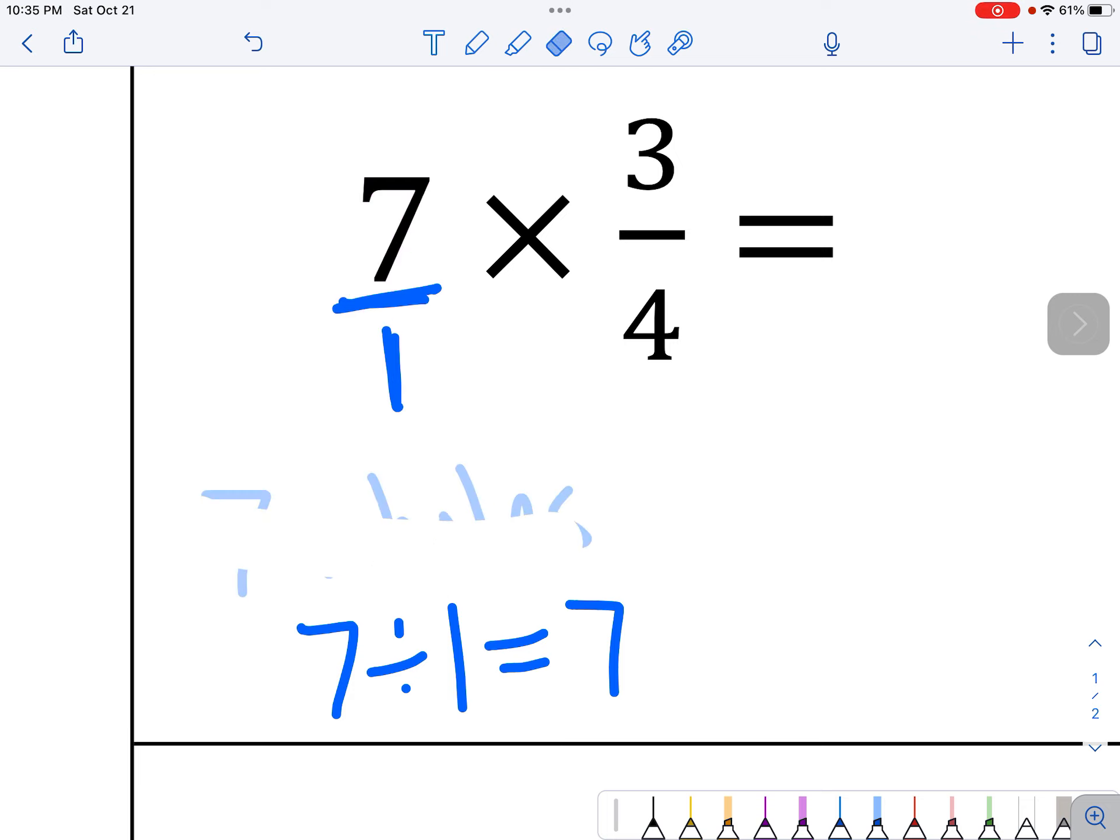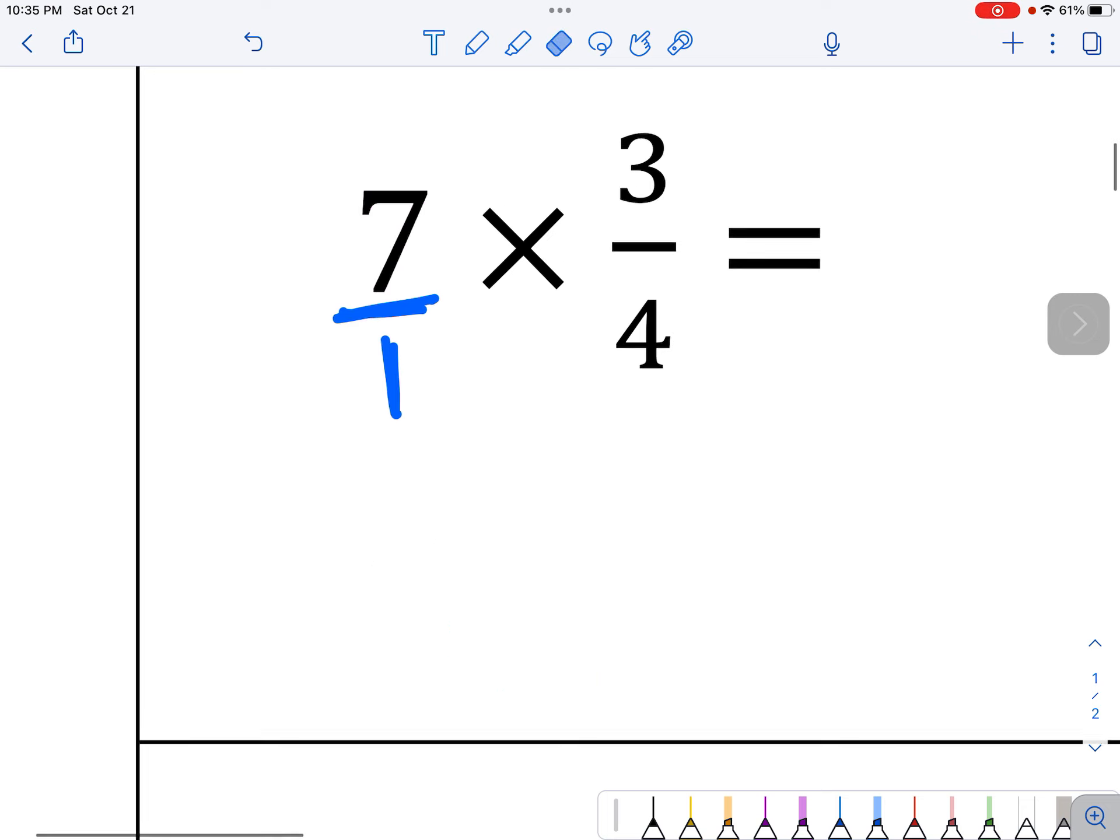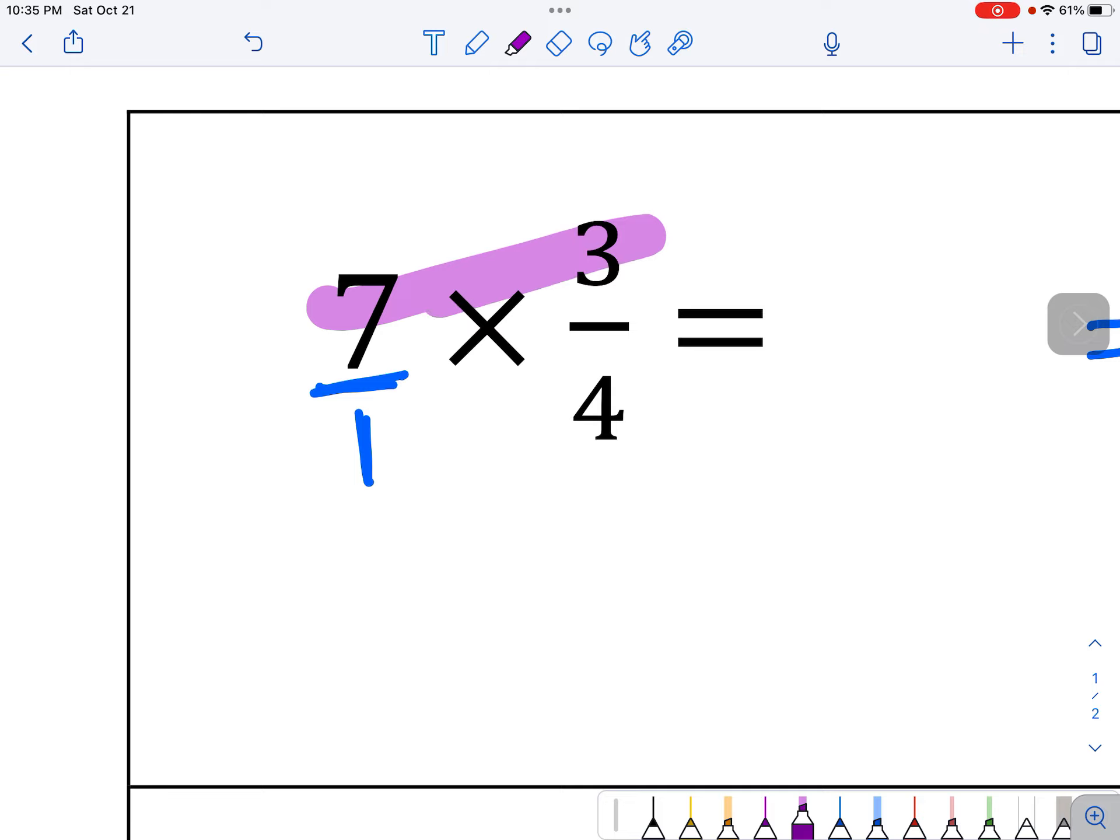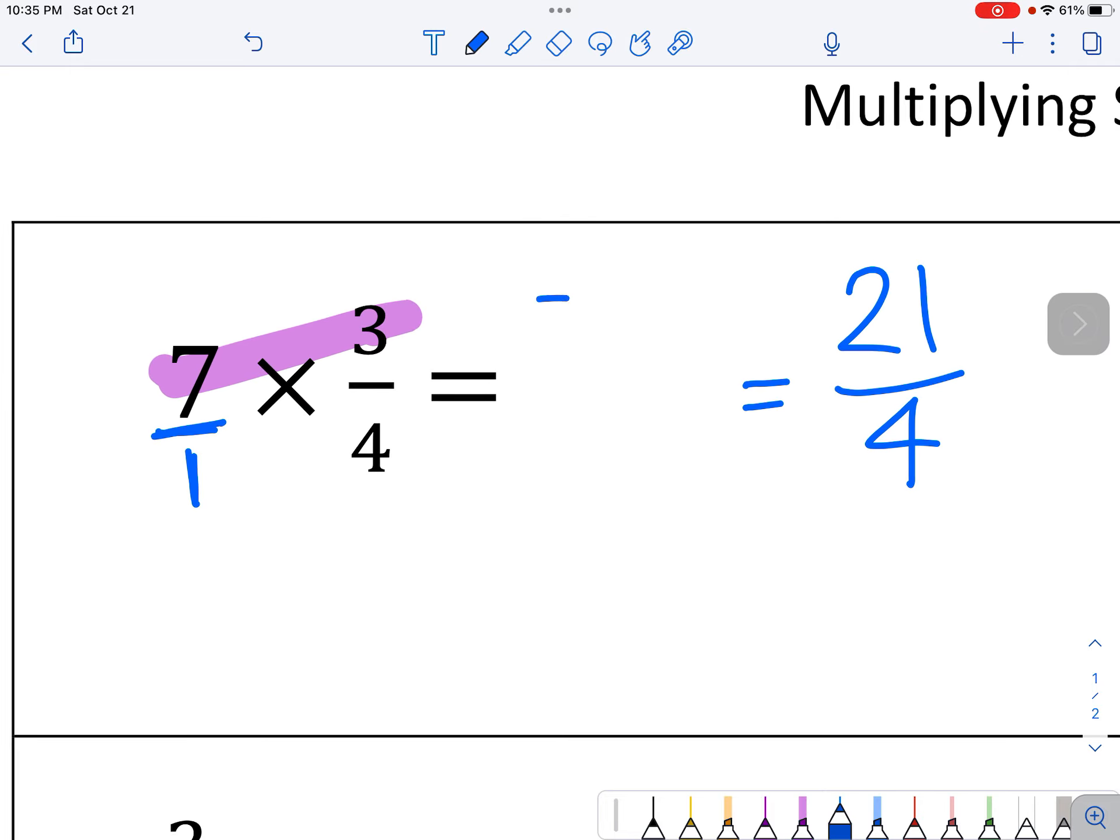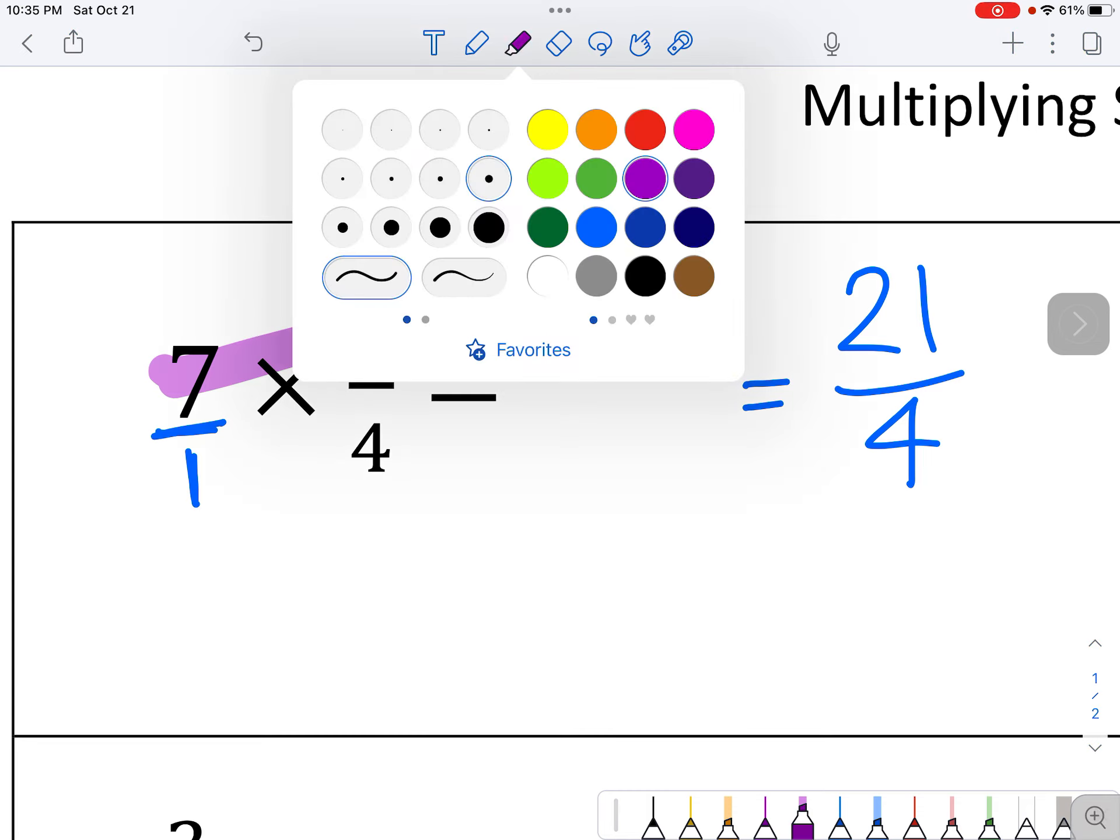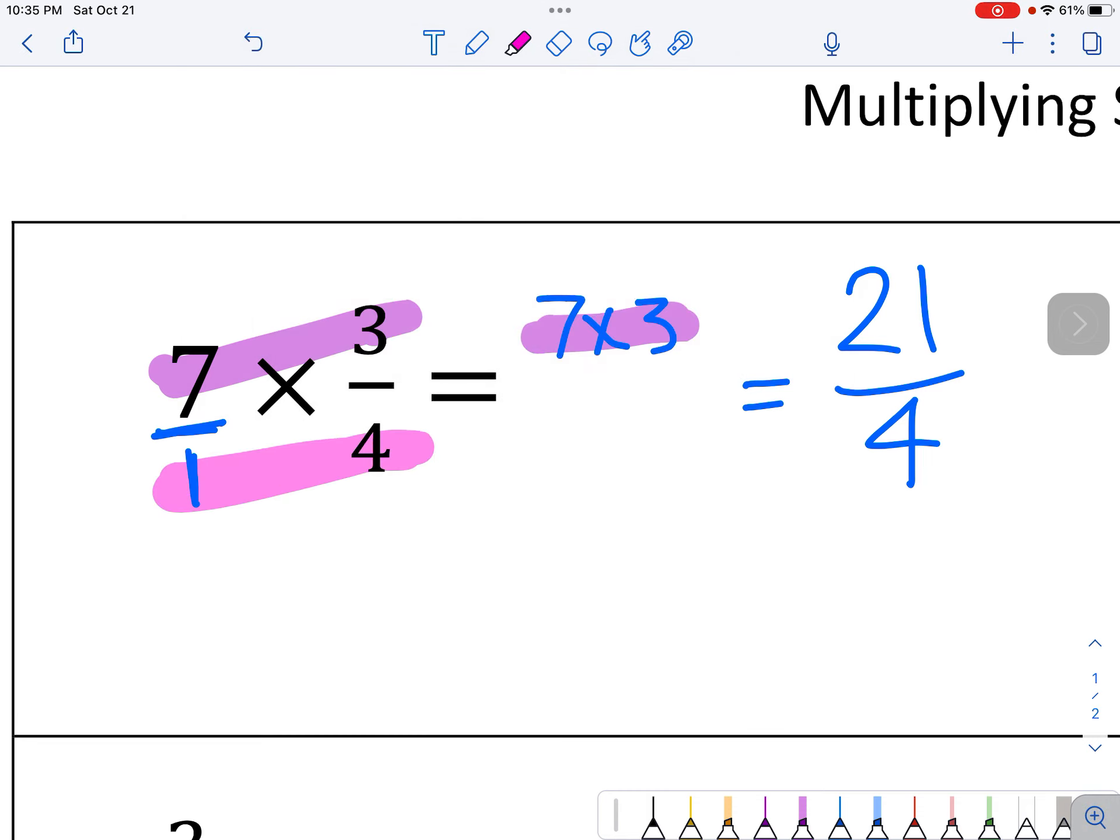But it's a helpful way to write the number 7, because now when I multiply across, now I can see here 7 times 3, right? So 7 times 3, that's on the top. And on the bottom, for the denominator, we have 1 times 4.